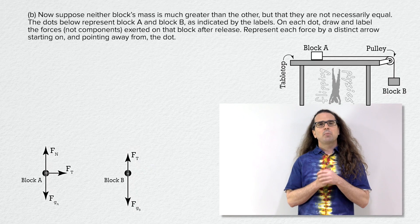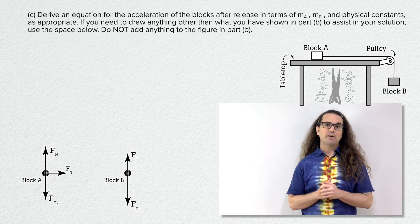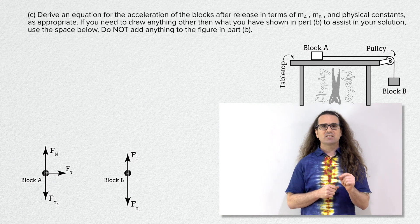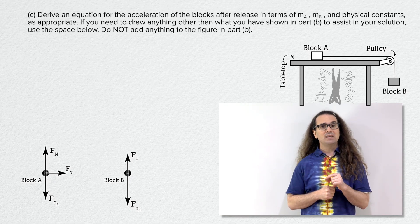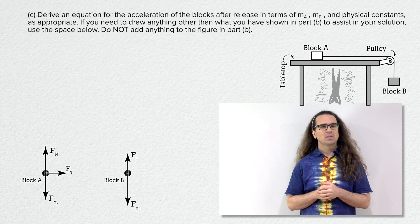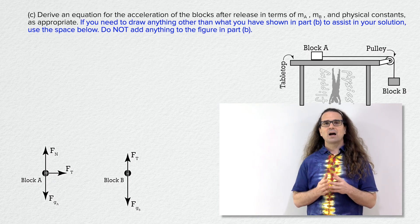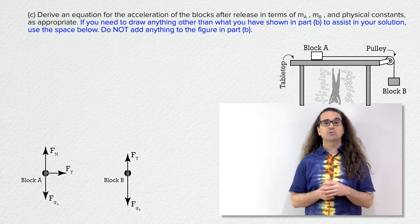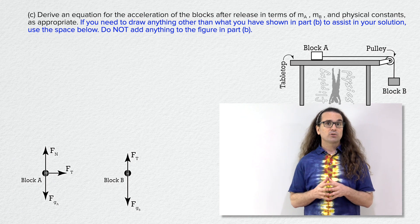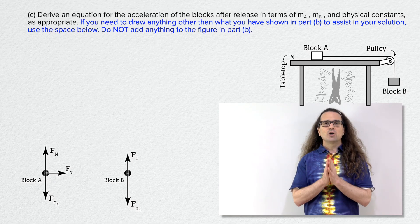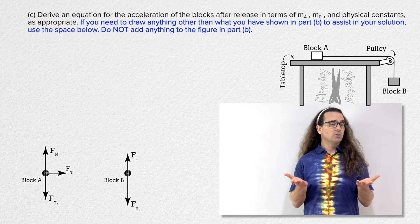I'll read part C. Derive an equation for the acceleration of the blocks after release in terms of mass of block A, mass of block B, and physical constants as appropriate. If you need to draw anything other than what you have shown in part B to assist in your solution, use the space below. Do not add anything to the figure in part B. That last part is a typical warning on these exams — please remember, when they ask for free body diagrams, they want them without components. Do not make changes to them after you draw them. If you need to break forces into components and redraw, do that in a different location. Let's solve for the acceleration. Who's got some ideas?